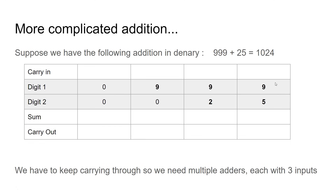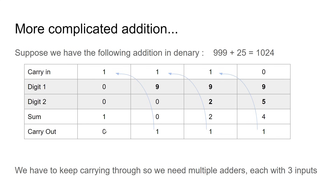How did we get there? In normal maths, we add the 9 and the 5, which makes 14. So the 4 stays, and the 1 carries up to the next column as carry-in. Then you add all three together: 9 plus 2 plus 1 carry-in is 12. The 2 stays and the 1 carries over again. Then 1 and 9 makes 10: the 0 stays in the sum and the 1 carries onto the next column. Finally, 1, 0, 0 gives a sum of 1 and carry out of 0. And there's your answer: 1024.